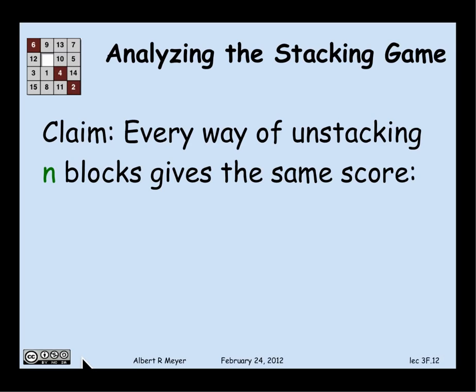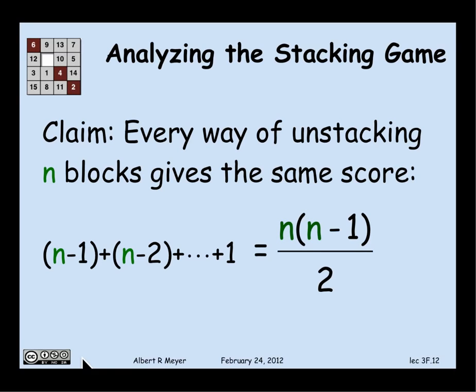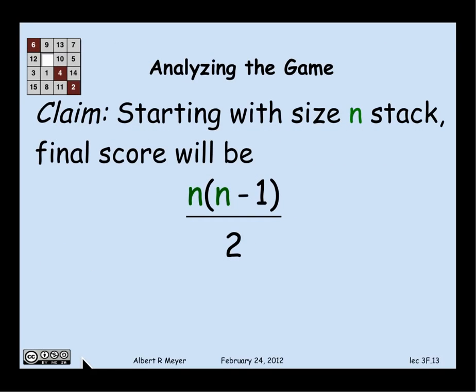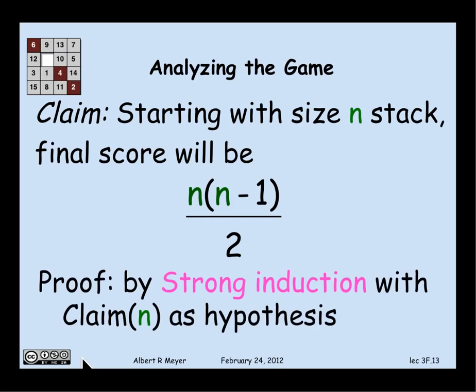And that's what we're going to prove now. Every way of unstacking N blocks gives the same score. Well, what score? Well, we know that the score for the simple strategy of taking one block off at a time is this sum from 1 to N-1. And that has a nice formula, N times (N-1) over 2. So we can formulate our claim that no matter how you play the unstacking game with a stack of size N, your final score will be N times (N-1) over 2. And we're going to prove this by strong induction with this statement called a claim of N is going to be the induction hypothesis. That's what we're trying to prove.